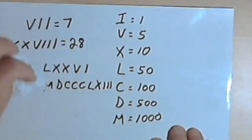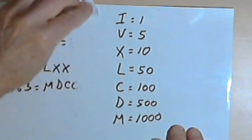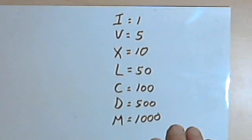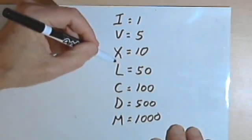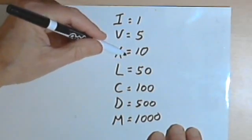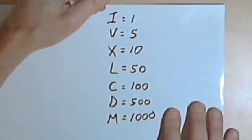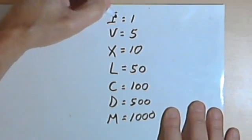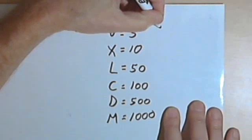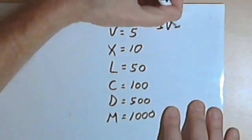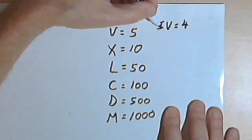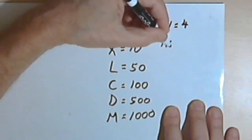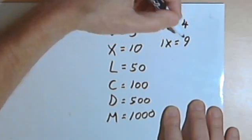Now, because it could get clumsy if you had to have, let's say, four I's for four or four X's for 40, we've got an addition to this system, and it works like this. If you put an I in front of a V, to the left of a V, so you have IV, that's going to equal 4. It's kind of like saying 1 from 5. If we take 1 from 10, or IX, we're going to get 9.